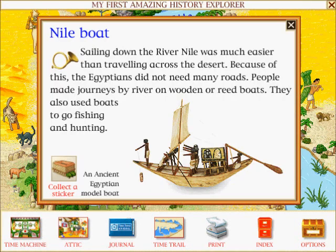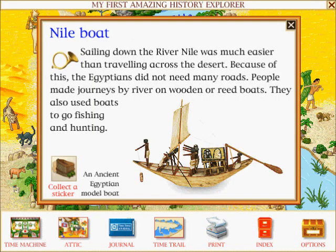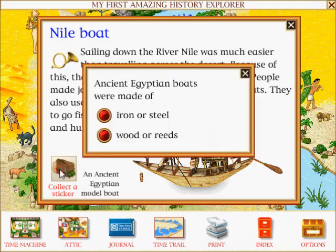Nile Boat: The Egyptians also used boats to go fishing and hunting. Ancient Egyptian boats were made of wood or reeds.